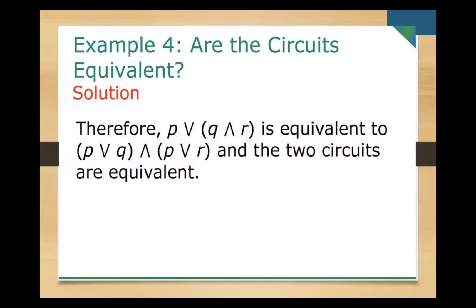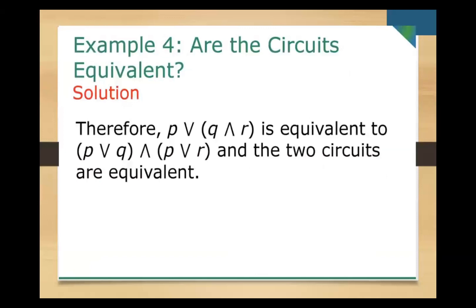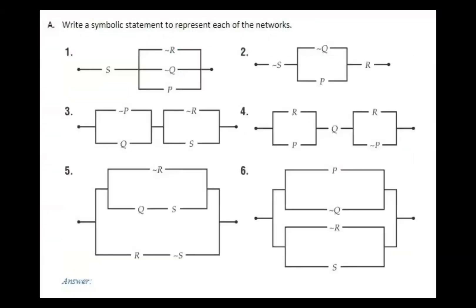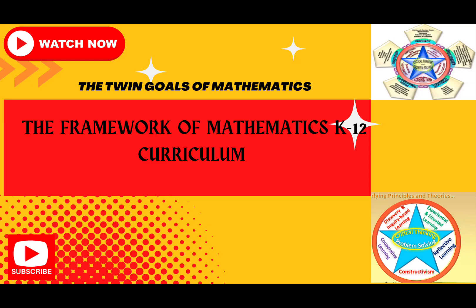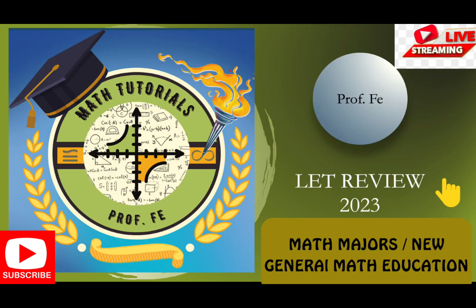Since the two truth table columns are identical, the circuits are equivalent. This demonstrates that p OR (q AND r) is equivalent to (p OR q) AND (p OR r) using the distributive property. The two circuits are equivalent. That's all for this session — thank you for watching, and please don't forget to subscribe and watch my other math tutorials.